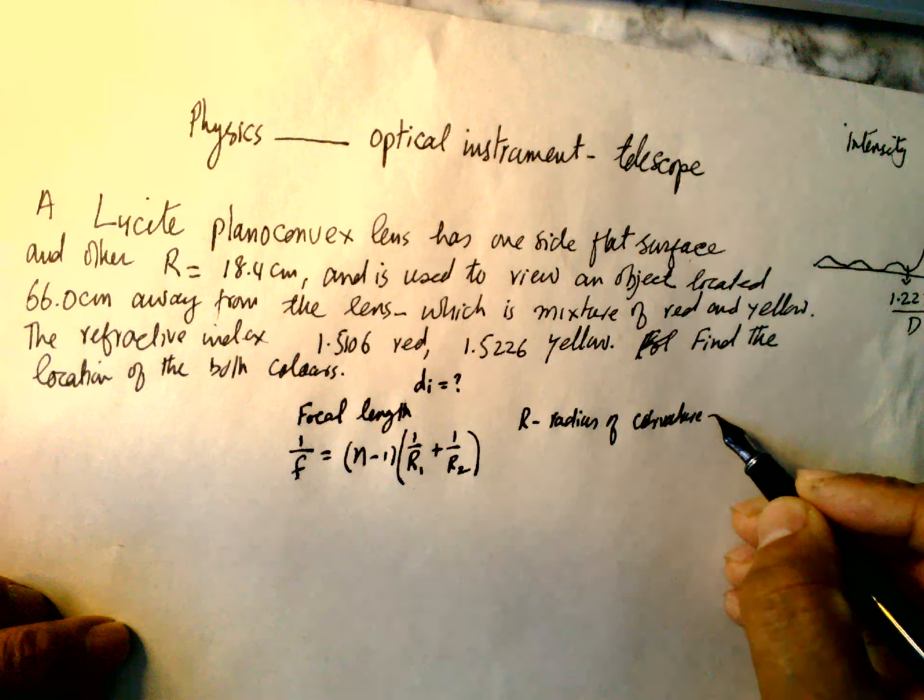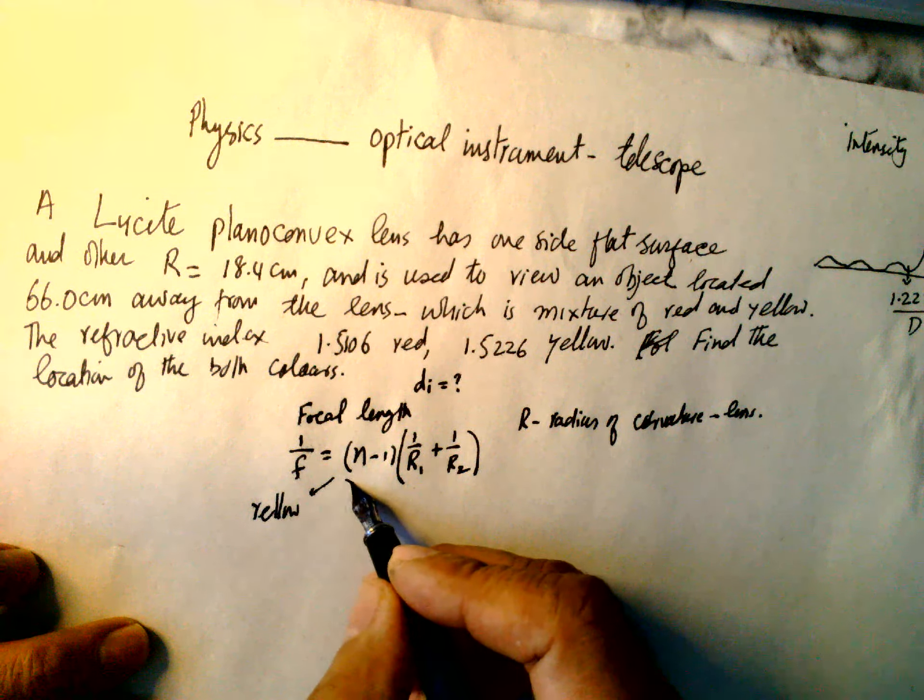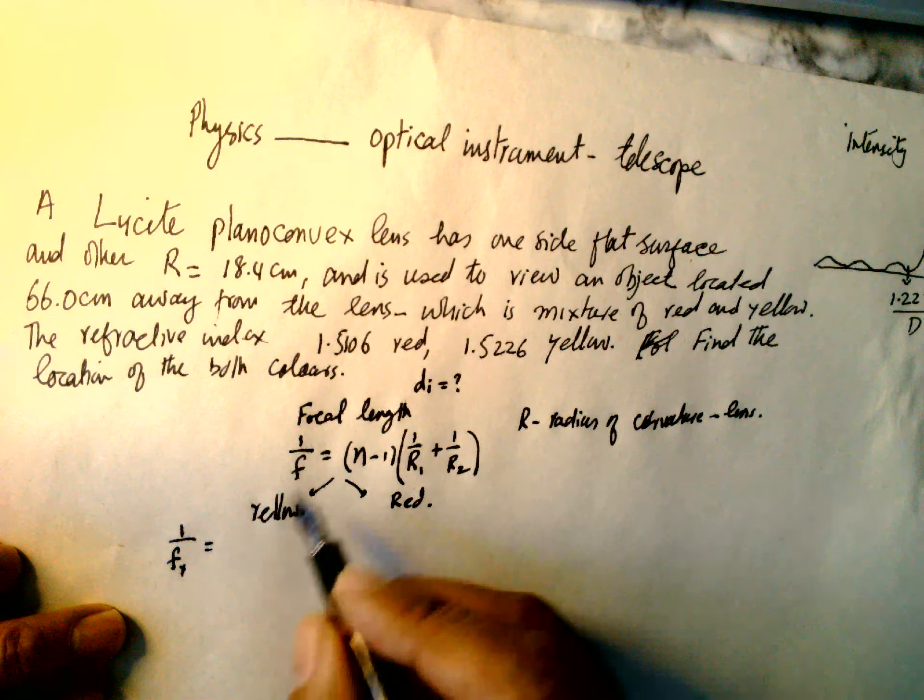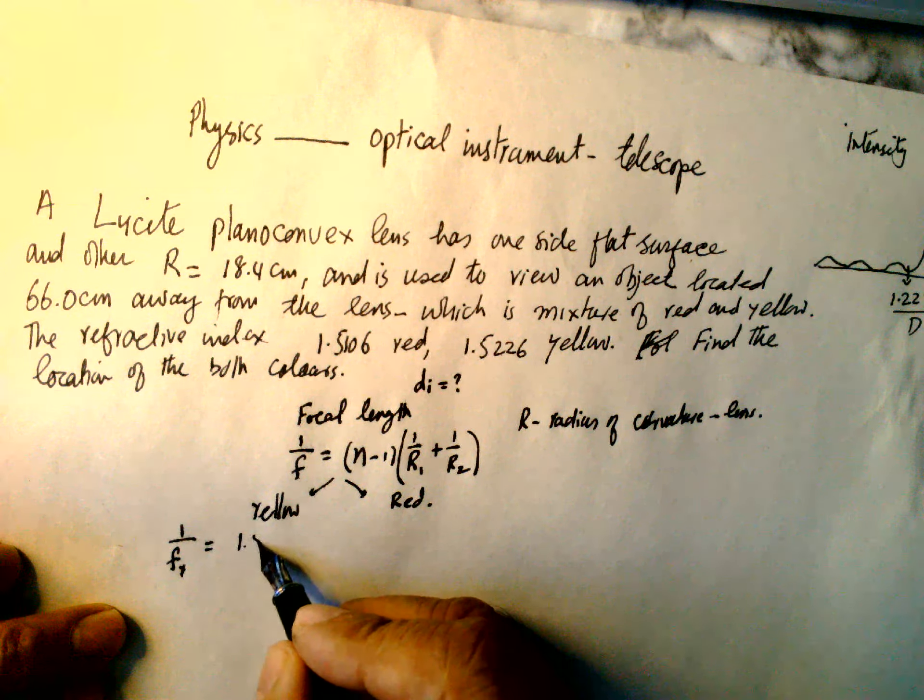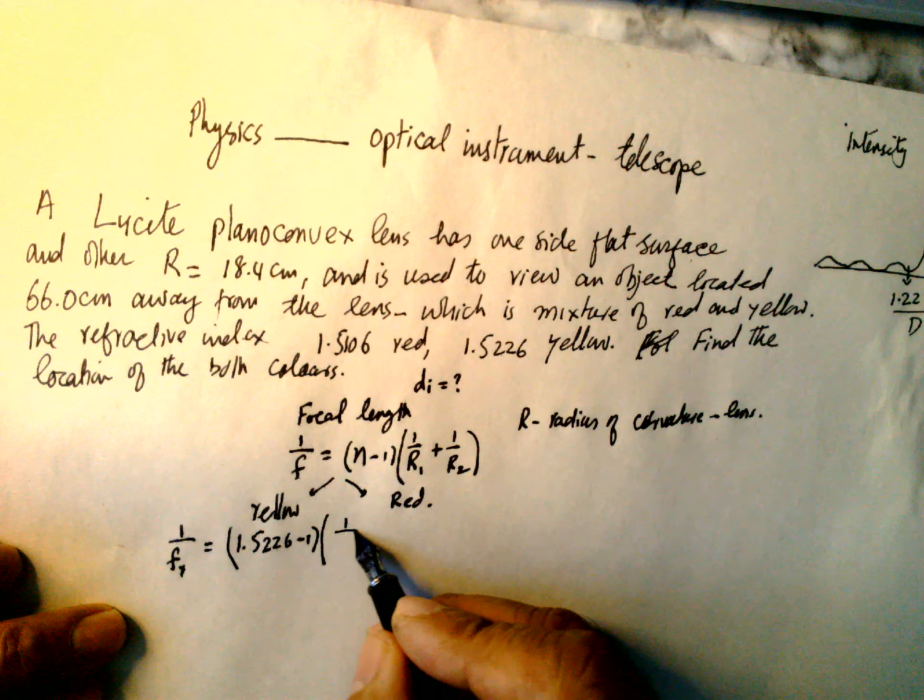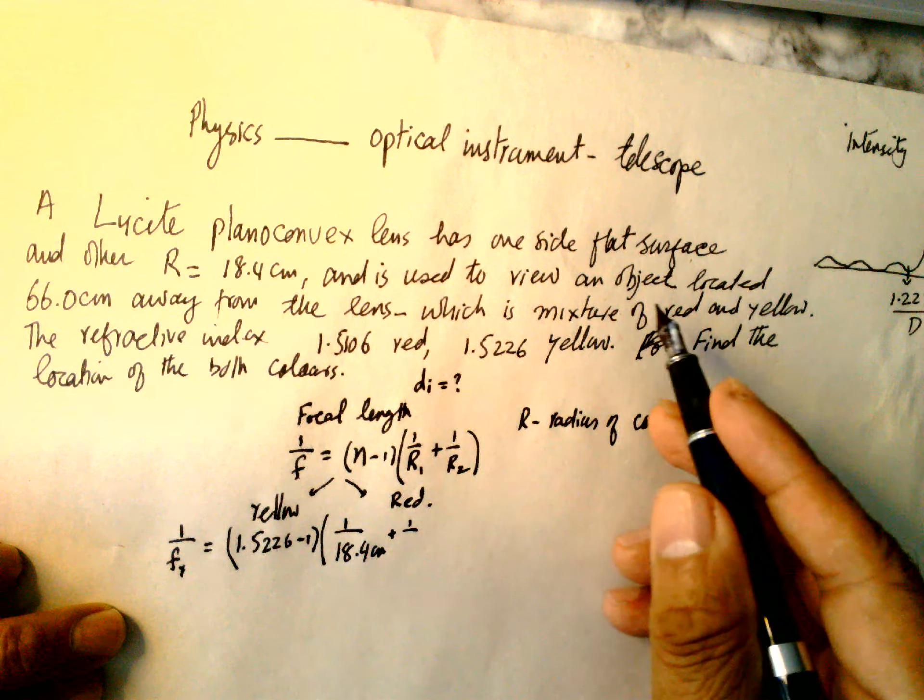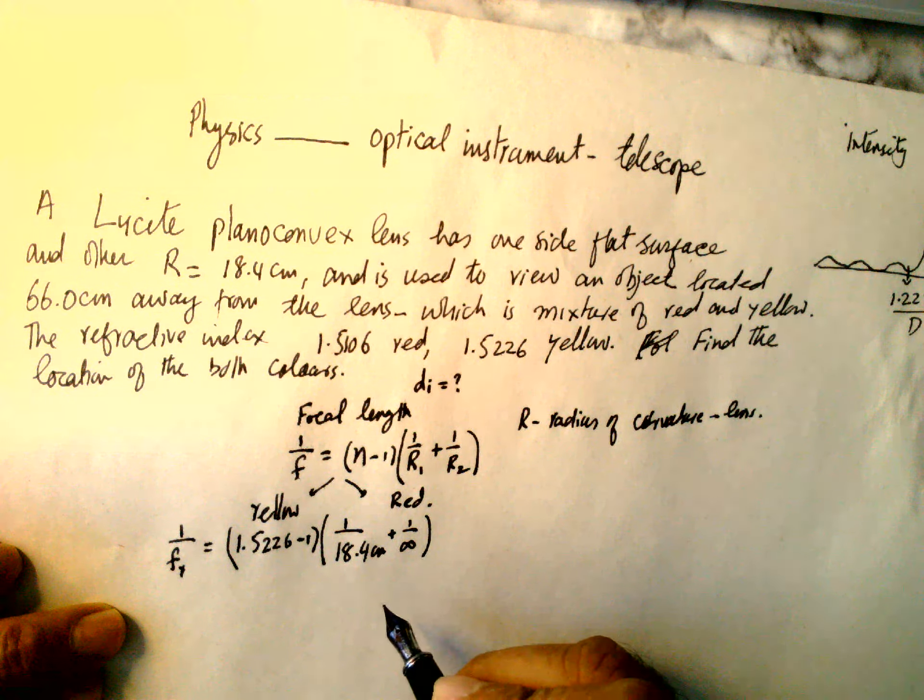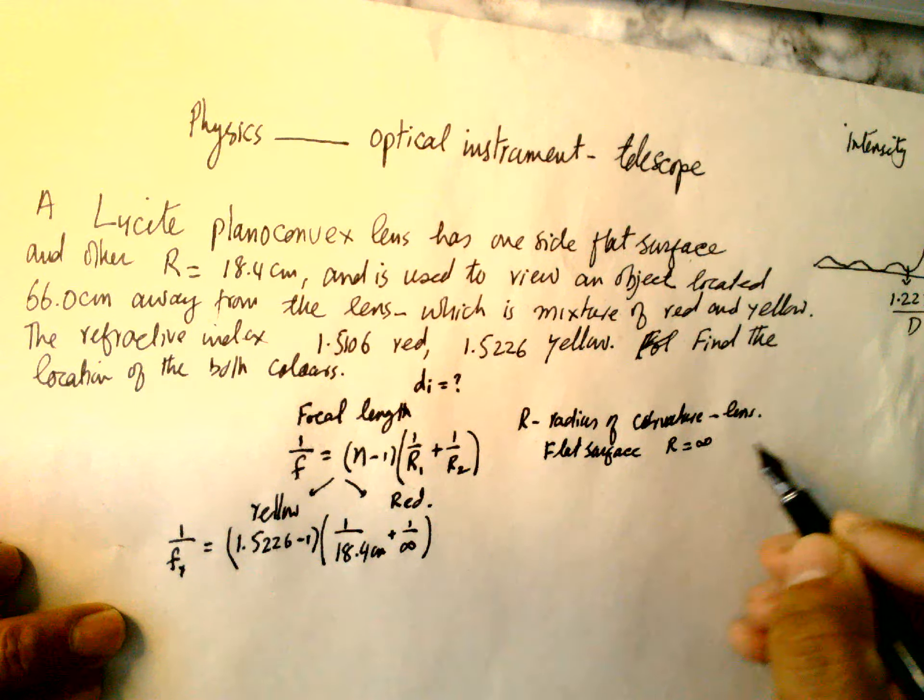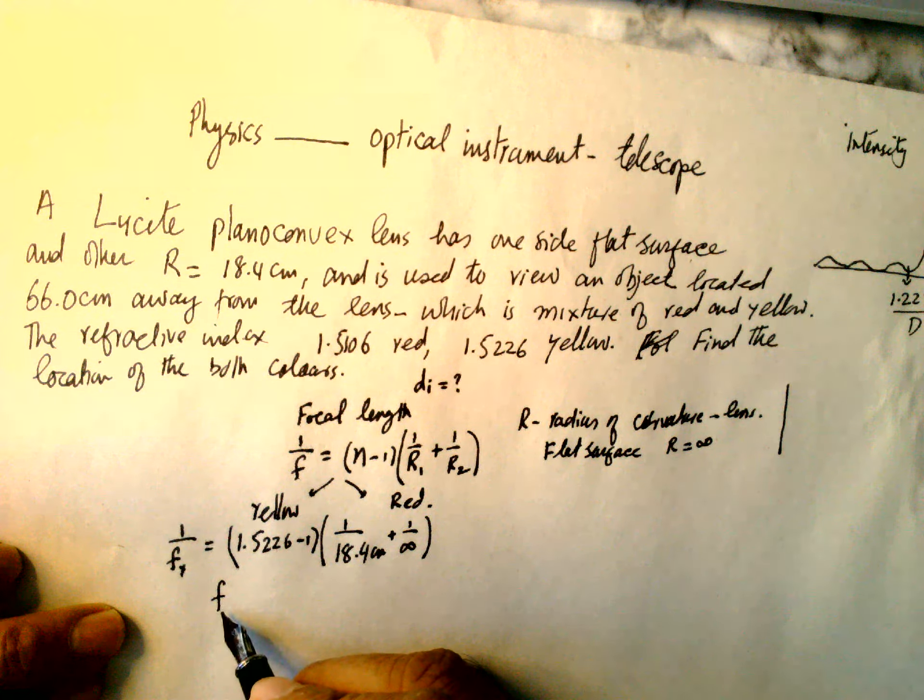There are two colors, one is yellow and another one is red. So 1/F_yellow = (1.5226 - 1) × (1/18.4 cm + 1/infinity). The other surface is flat, so radius of curvature of flat surface is infinity. This will give us F_yellow.